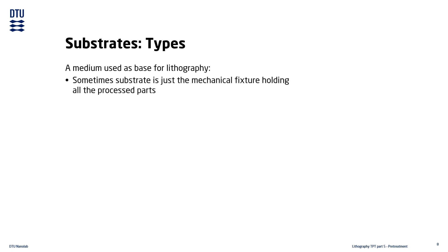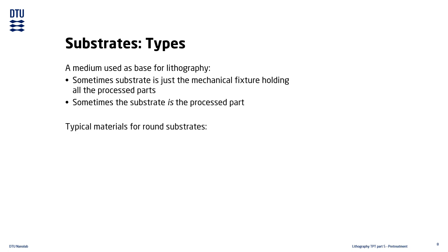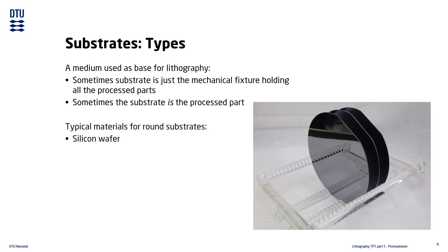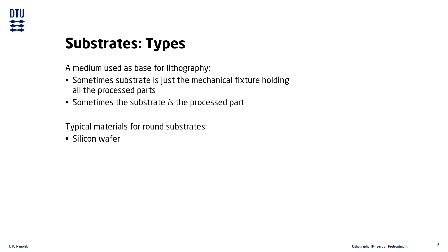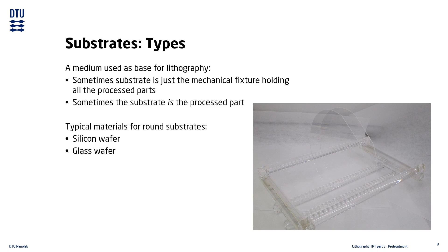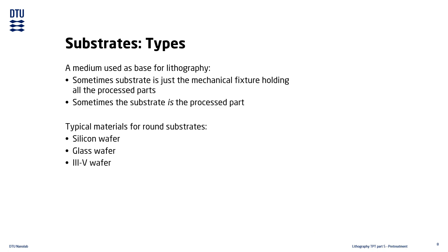All processing begins with the substrate. A substrate can either be the thing that mechanically holds all the interesting parts you put on top of it, or sometimes the substrate is the interesting part which is being processed. Typical substrates used in the fabrication lab are silicon wafers, glass wafers, and 3-5 wafers. Silicon wafers are the backbone of the semiconductor industry. Glass wafers are commonly used for optical transmission devices, and 3-5 wafers are used in many optoelectronics such as LEDs. The name 3-5 comes from the materials they are made from — materials from the boron and nitrogen groups in the periodic table, once named group 3 and 5 respectively.